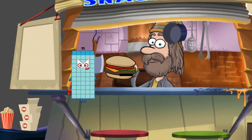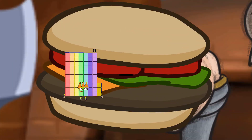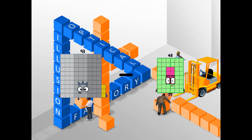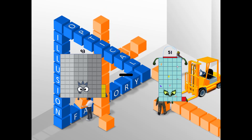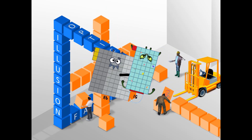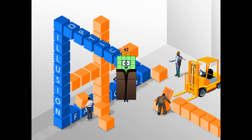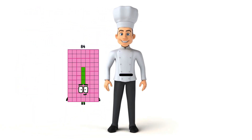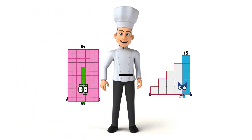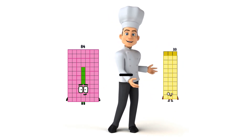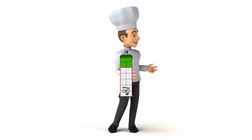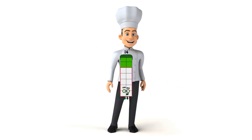93 minus 51 equals 42. 84 minus 70 equals 14.